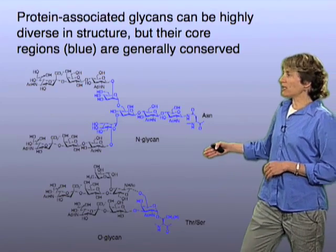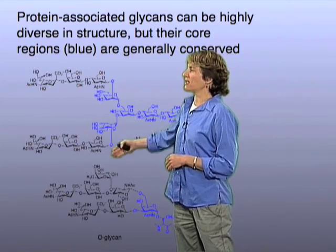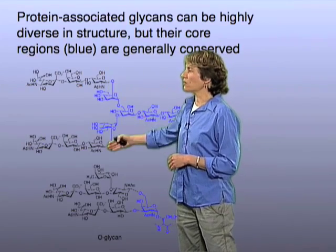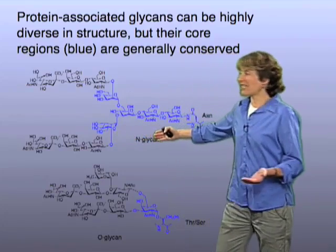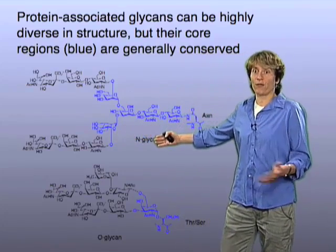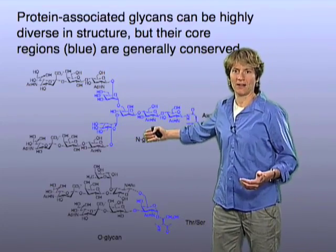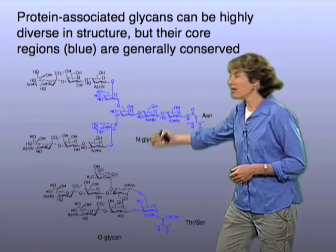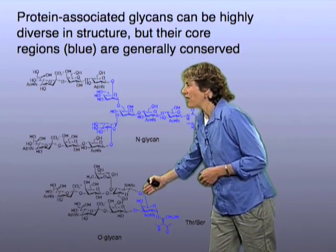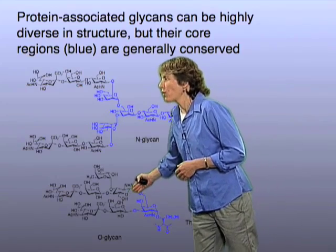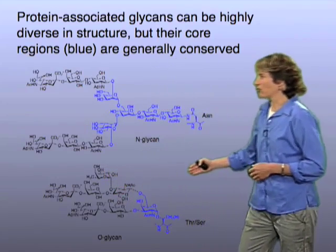As you can see, this particular N-glycan is branched — it has two arms, which we call antennae. It turns out these N-glycans can have three antennae or four antennae, and can be much more complicated than this. And here, this O-glycan also has a branch point and then another branch point — it's a pretty complicated structure.